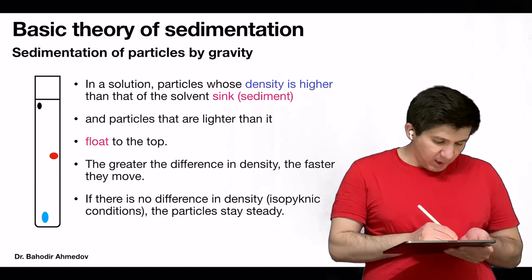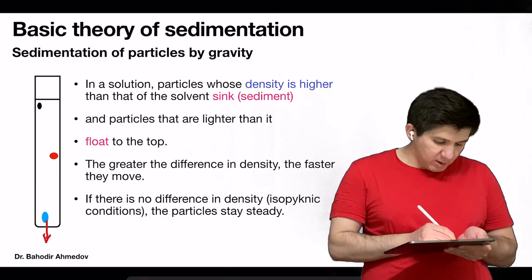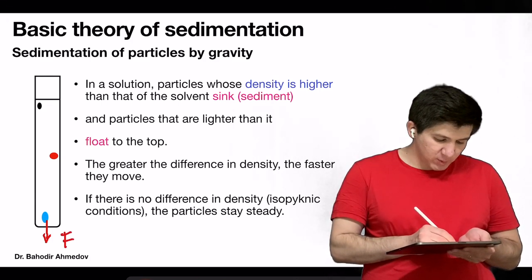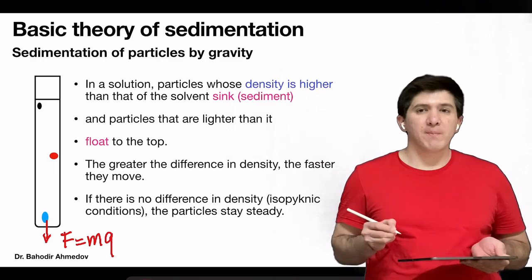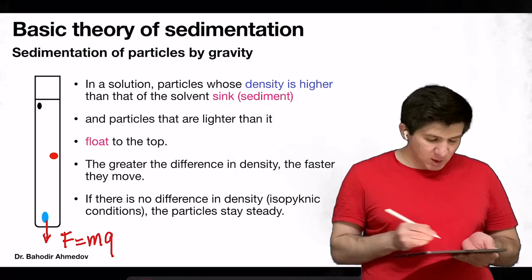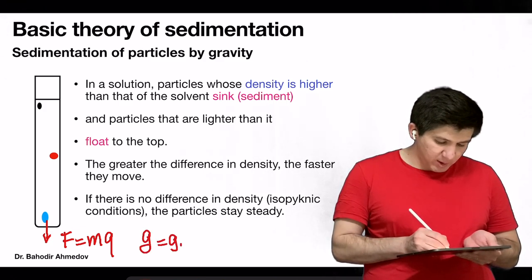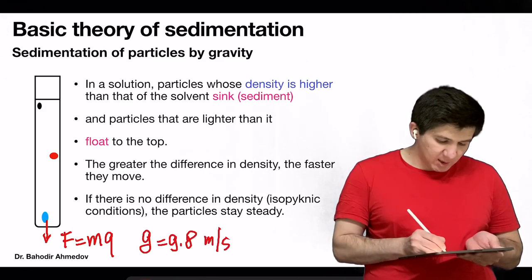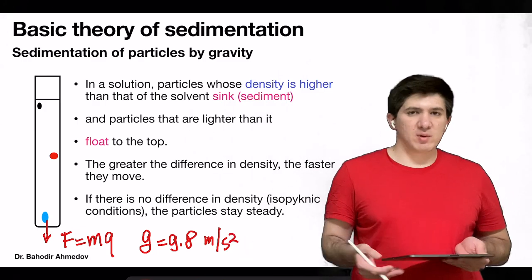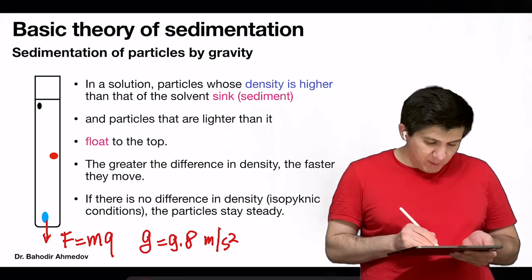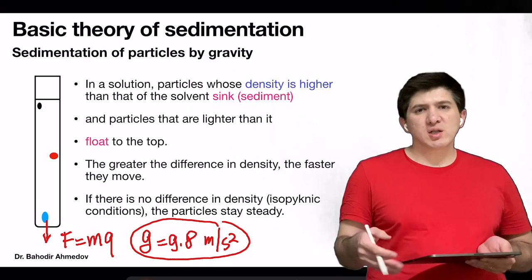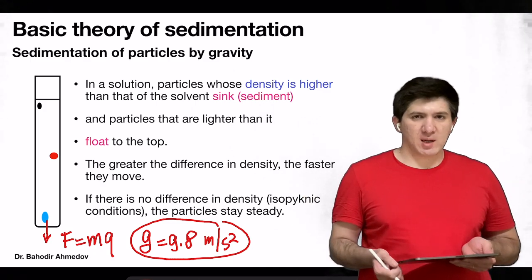The force which basically pulls these particles down to the bottom of the tube is the gravitational force, which is equal to the mass of the particle times g, the gravitational acceleration. The g is a constant equal to 9.8 meters per second squared. In our theory of centrifugation, this g is really important — you can remember it as roughly 10 meters per second squared.